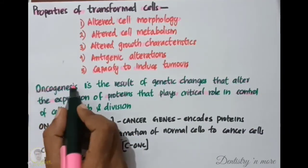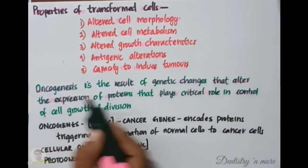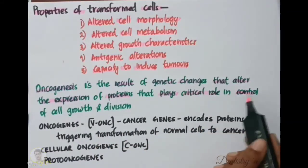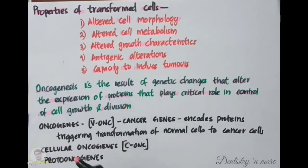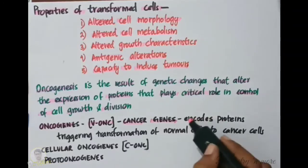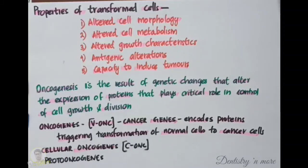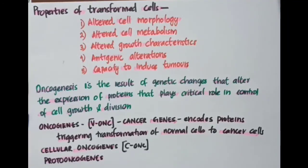Oncogenesis is the result of genetic changes that alter the expression of proteins that play a critical role in controlling cell growth and division. Viral oncogenes, also called V-onc or cancer genes, encode proteins which trigger the transformation of normal cells to cancer cells. Cellular oncogenes are oncogenes isolated from cancer cells, while proto-oncogenes are the corresponding genes found in normal cells.